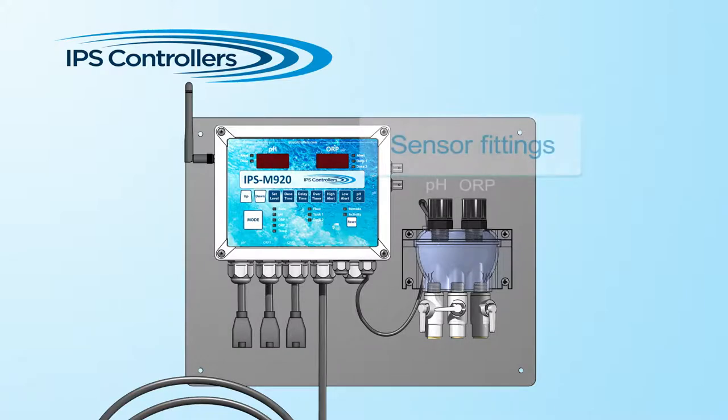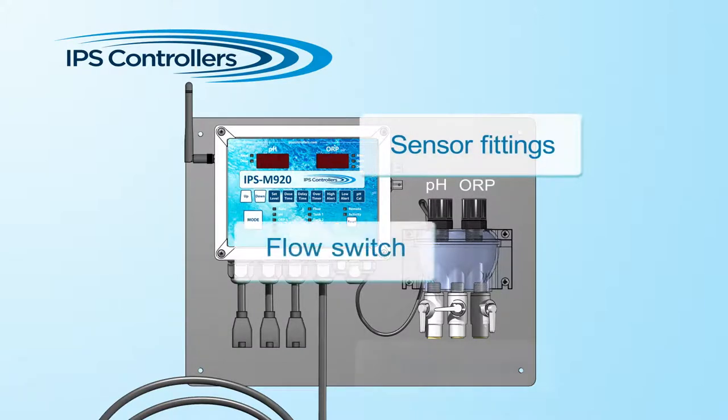The flow cell contains the fittings for the pH and ORP sensors, flow switch, and flow valves.